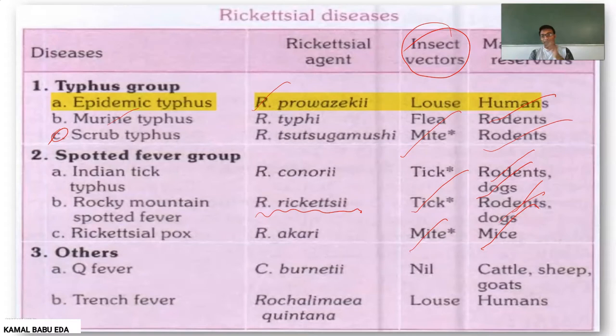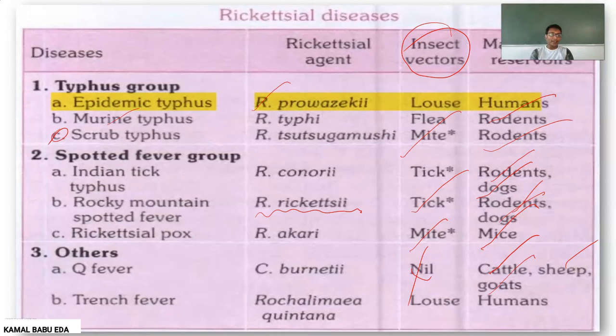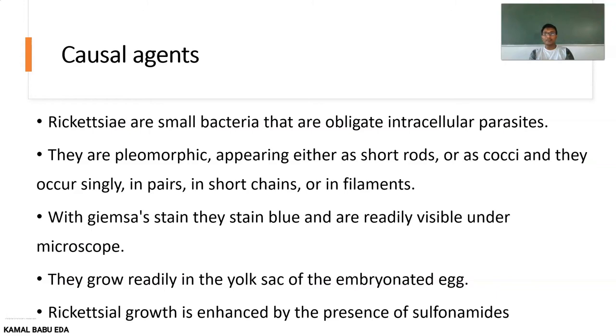Under other types of rickettsial diseases, the first is Q Fever, mainly caused by Coxiella burnetii. There are no insect vectors, but the mammalian reservoirs are cattle, sheep, and goats. The last one is Trench Fever, caused by Rochalimaea quintana; the insect vectors are louse and the mammalian reservoirs are human beings.